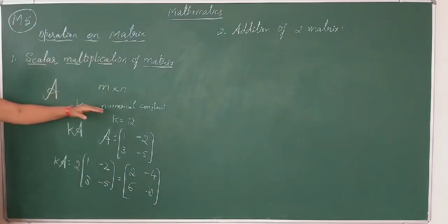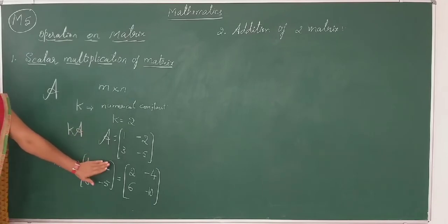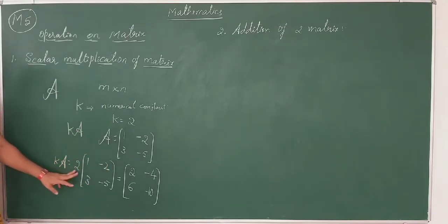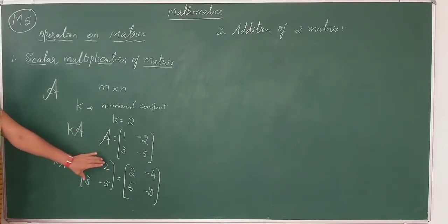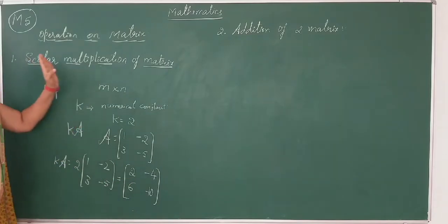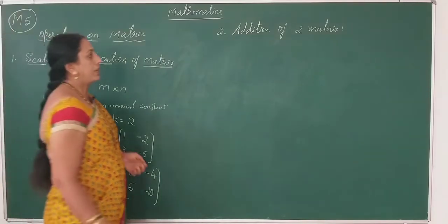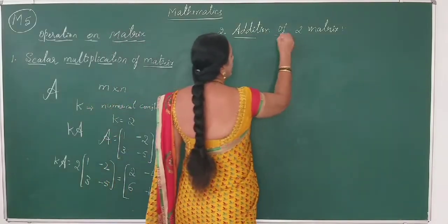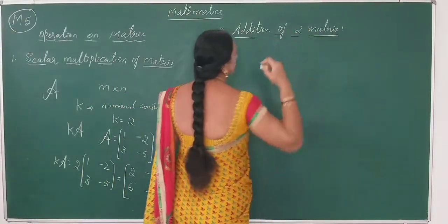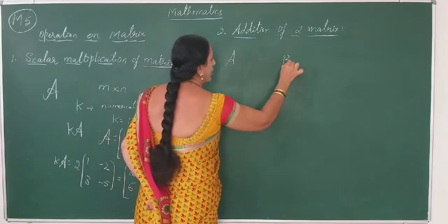That is called scalar multiplication of a matrix. Scalar means a numerical constant. If all the elements of the matrix are multiplied by that constant, it is called scalar multiplication. Similarly, the next operation is addition of two matrices.